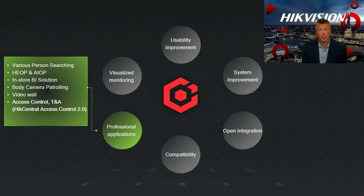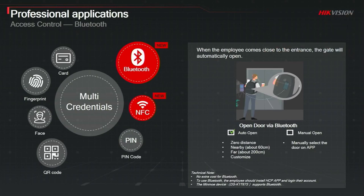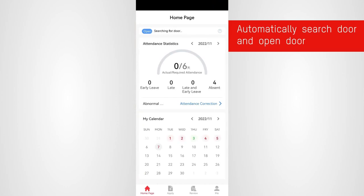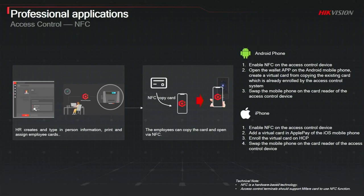I'm now going to introduce new improvements to our non-CCTV application: access control. Access control Bluetooth has been asked for more and more — using your mobile phone as an access control credential. If someone forgot their access control fob they aren't going to go back and get it, but if they've left their mobile phone they're far more likely to. Now with the HikeCentral app on your phone, with the right reader and terminals, this is fully supported using either NFC or Bluetooth. This slide shows how simple it is to set up your mobile phone as an access control card using NFC — once HR have enrolled you in the access control system.